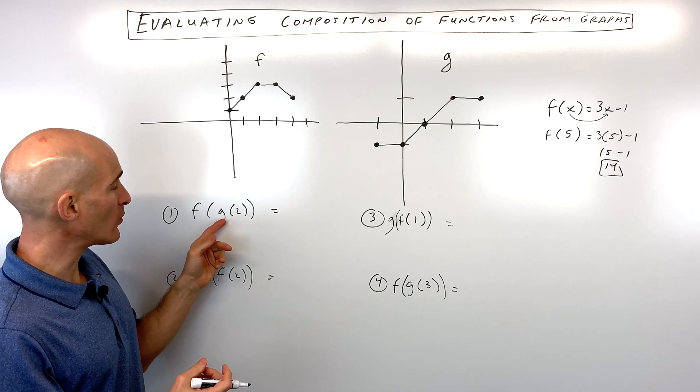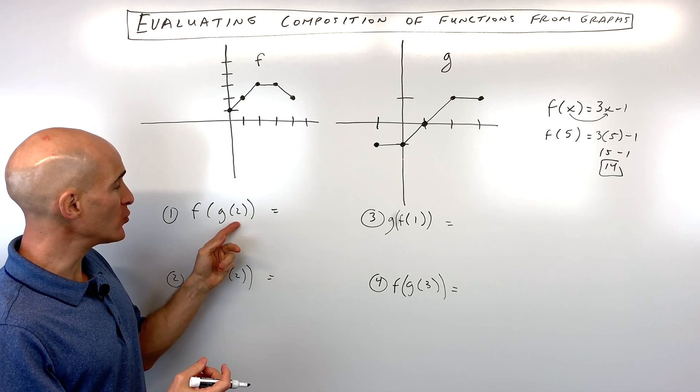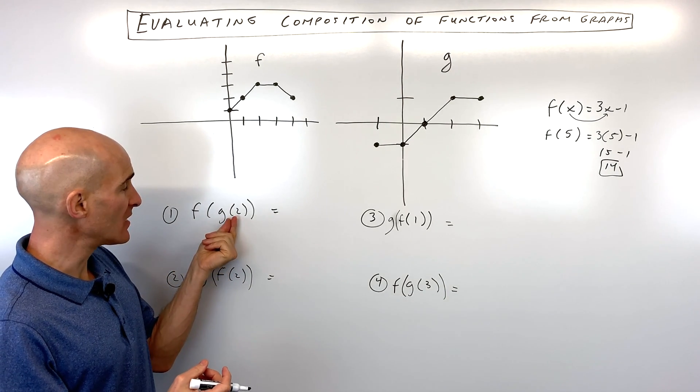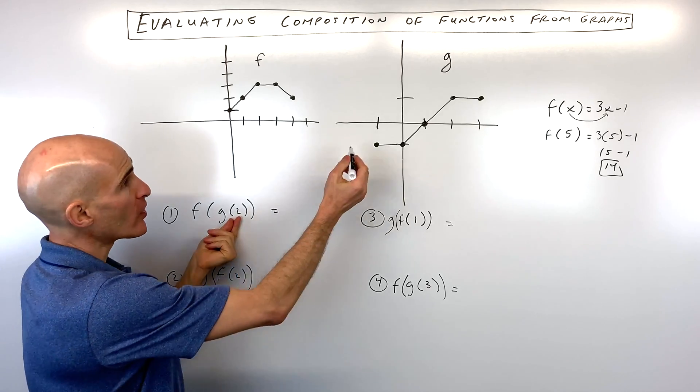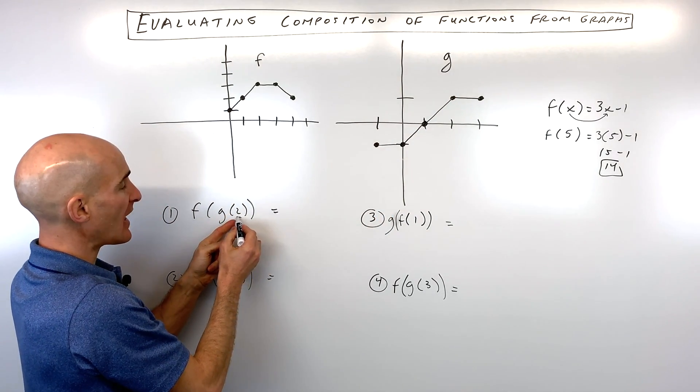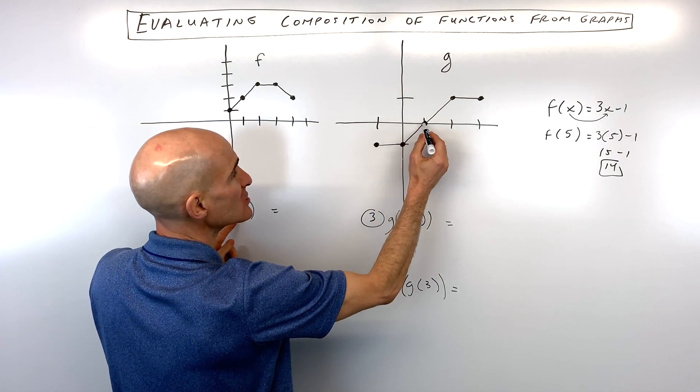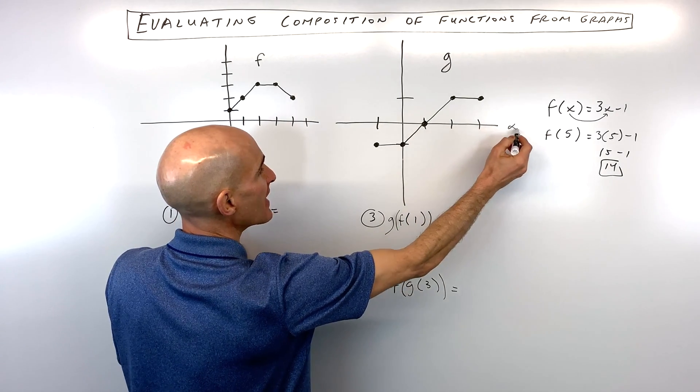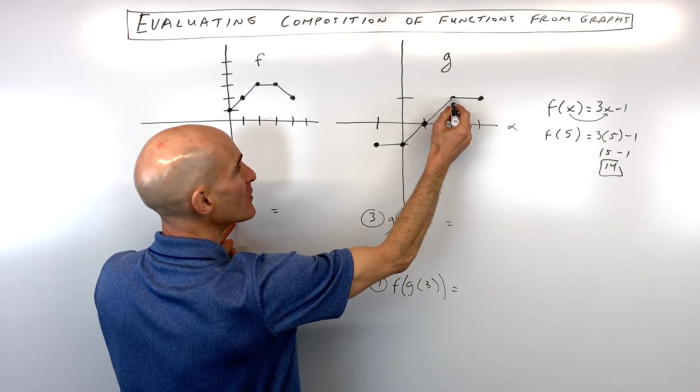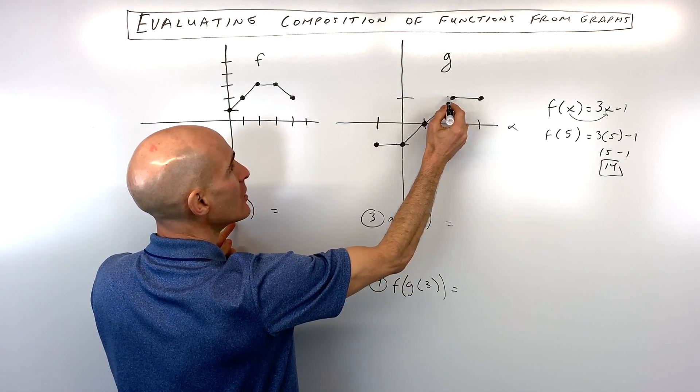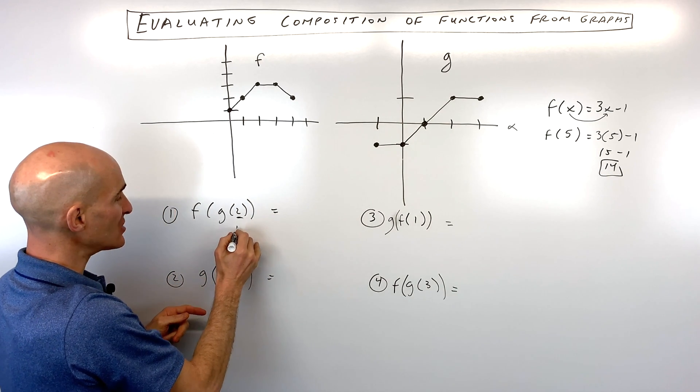For example, if we're doing number 1 here, what's f of g of 2? We start on the inside of the parentheses, g of 2. We go to our g function. We realize that when the x value is 2, so let's see, x is 1, 2, right? This is the x-axis. We go up to the graph. We can see that the y value is 1. So this is actually equal to 1 right here.